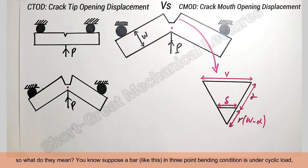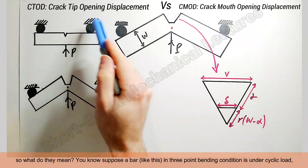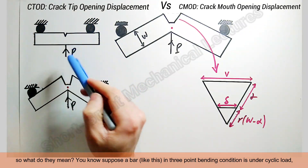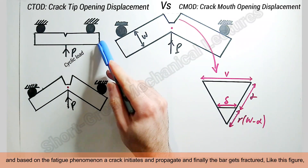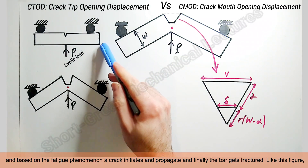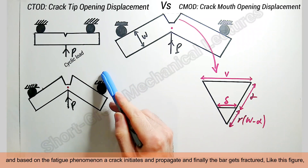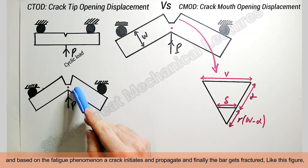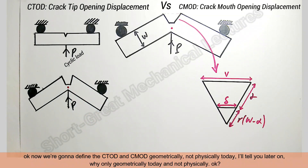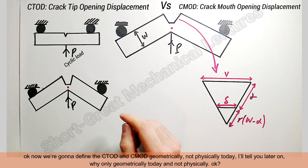So what do they mean? Suppose a bar like this in a three-point bending condition is under cyclic load. Based on the fatigue phenomenon, a crack initiates and propagates, and finally the bar gets fractured, as shown in this figure.